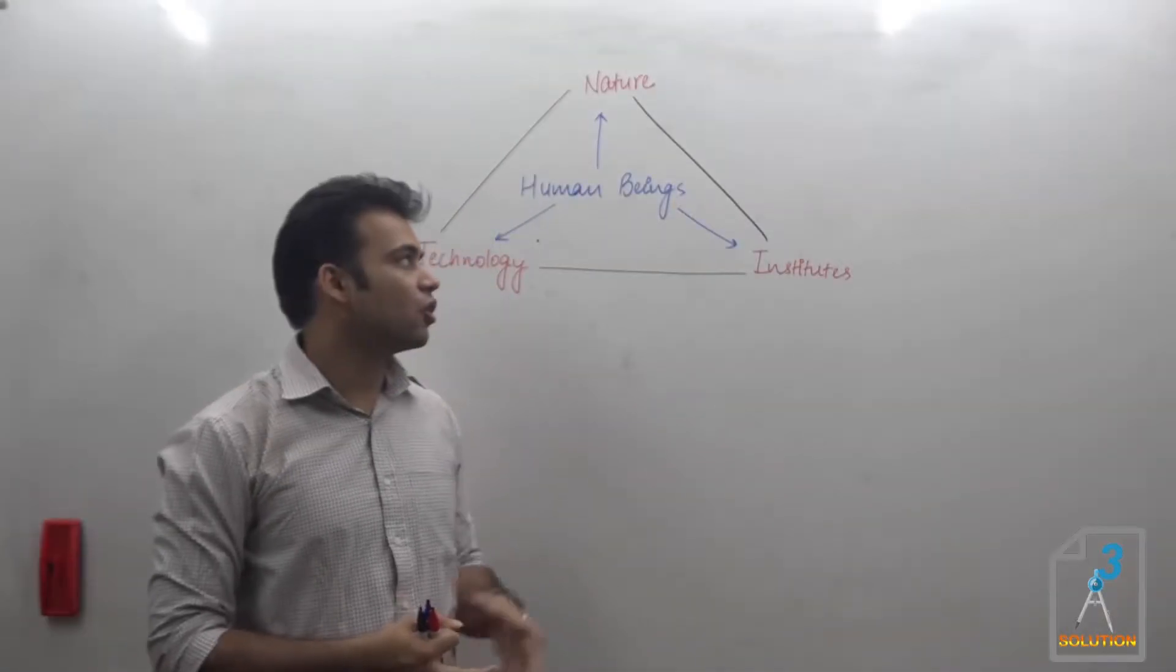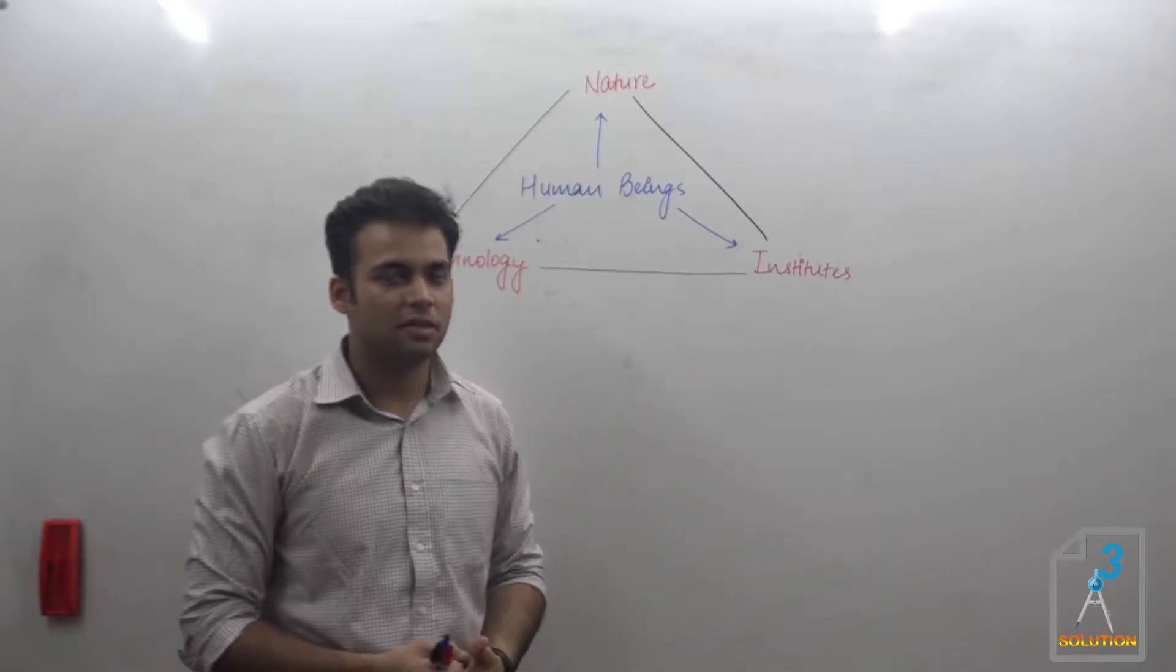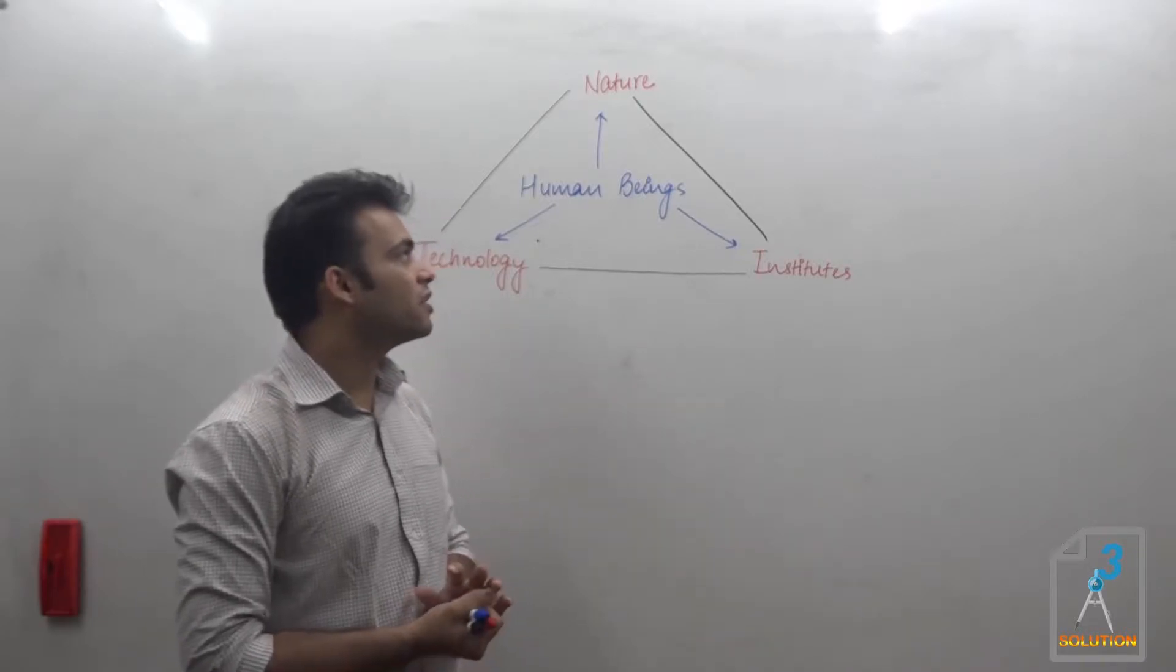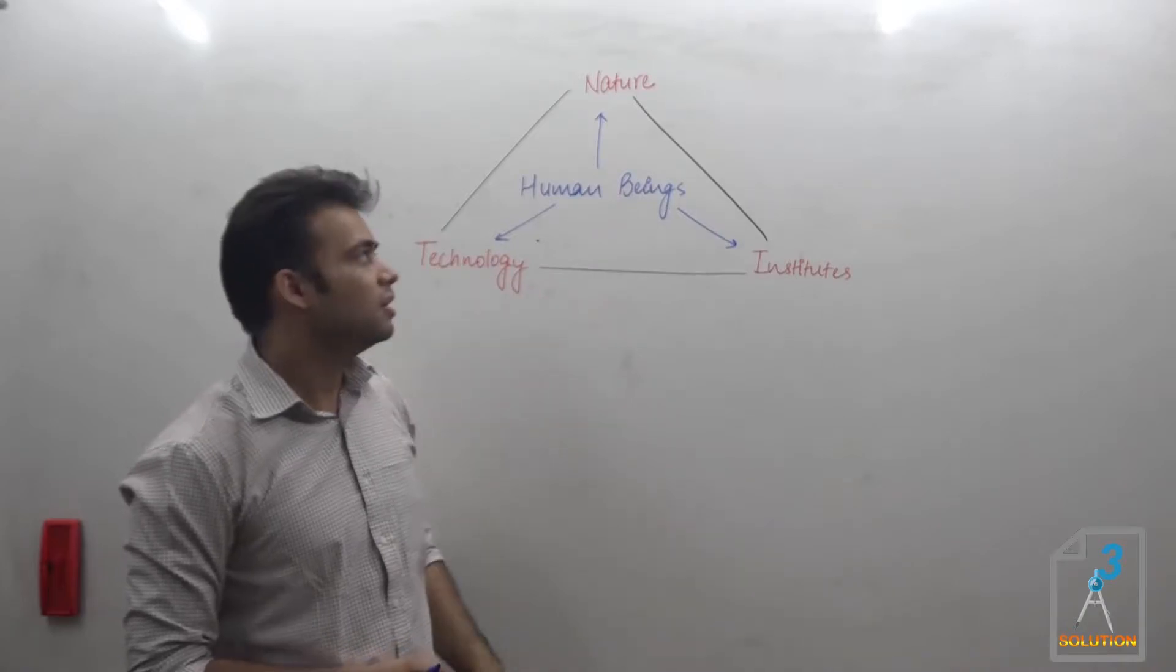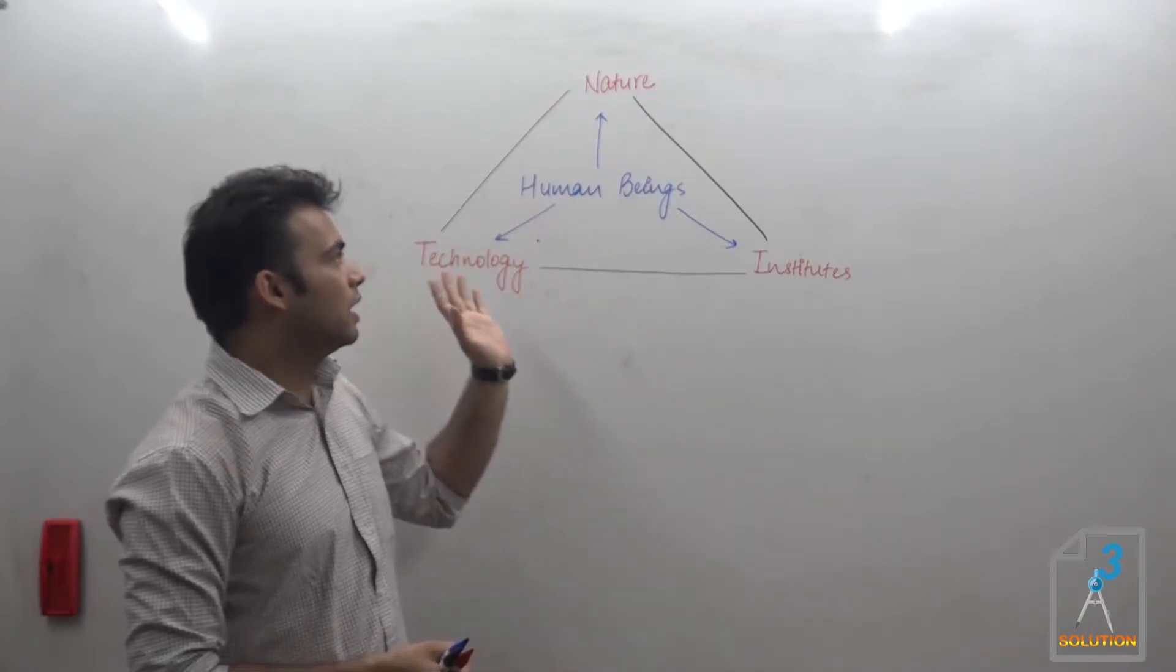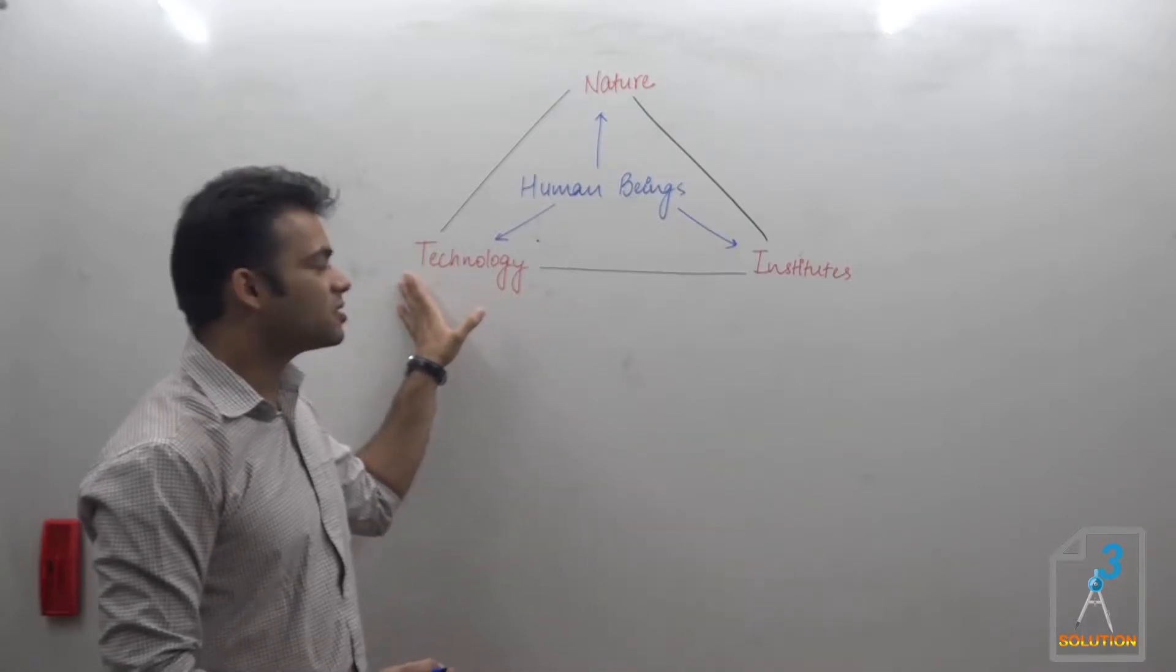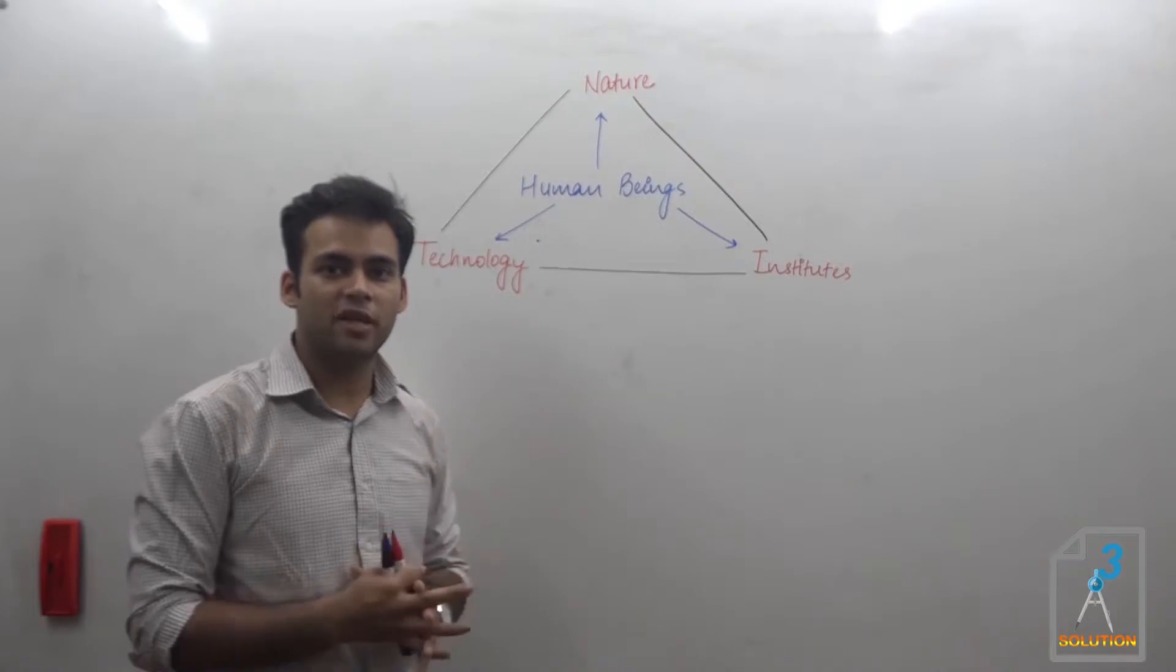Human life has always evolved around three different parameters. The first parameter is nature—whatever resources we are getting are given to us by nature. When we have accessed our resources, we must have some kind of technology to use that resource to its full potential.